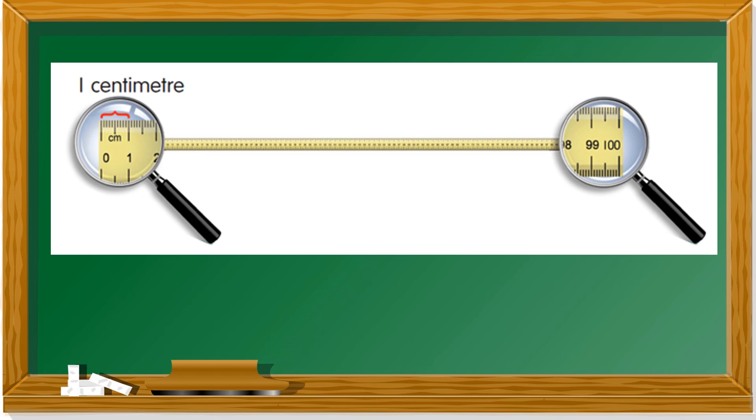This is a meter ruler. A meter ruler is made of 100 centimeters. So, the length of the ruler is 100 cm. And 100 cm is equal to one meter. One meter, 100 centimeter.